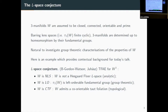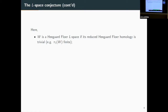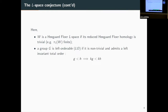A Heegaard Floer L-space is a manifold whose reduced Heegaard Floer homology is trivial — it's like a homology point, acyclic in the Heegaard Floer world. Heegaard Floer homology is a Lagrangian Floer homology associated to a manifold; it's defined analytically via a chain complex whose boundary homomorphisms are defined analytically.